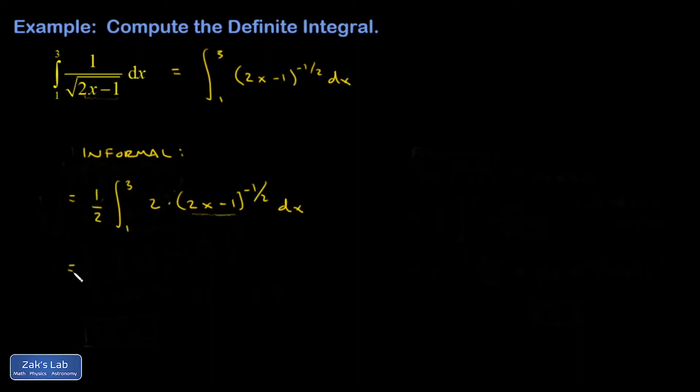Now I have to compensate by putting one half out in front. Then I can just guess the antiderivative. It's this thing to the positive one half divided by positive one half. Dividing by positive one half is the same as multiplying by 2 over 1.